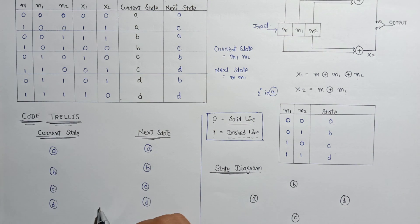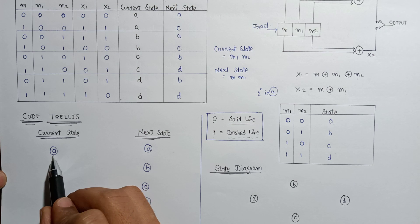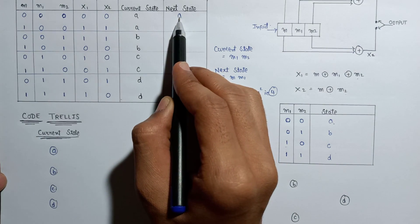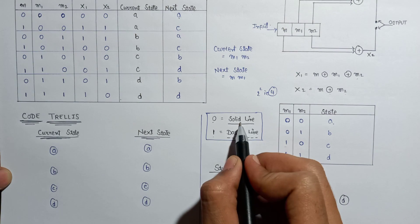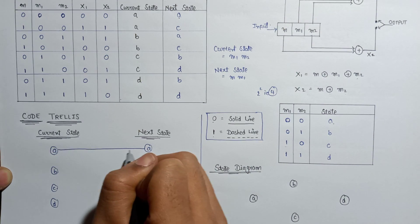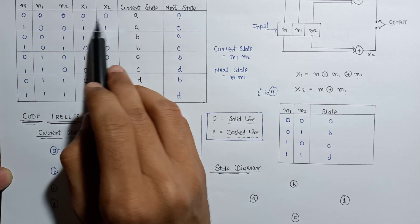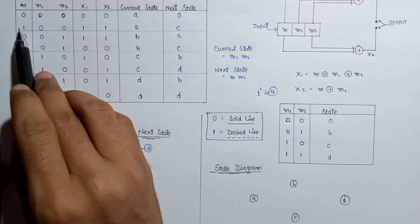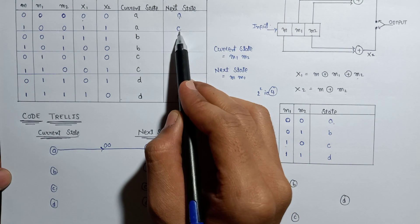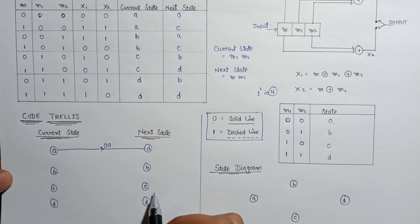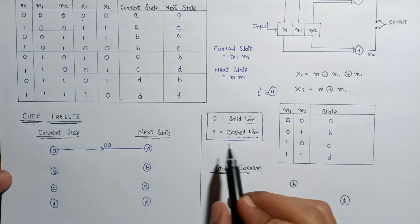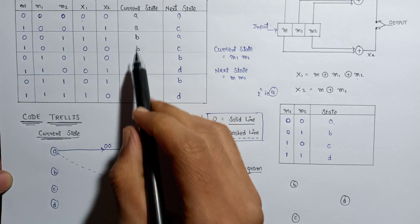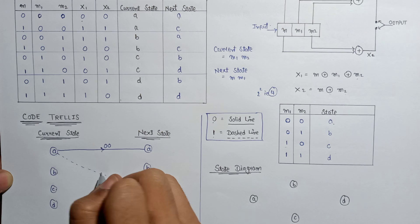Let's plot the code trellis diagram. If the current state is A and the input bit is 0, then the next state is A. Since it is 0, we use a solid line, and the output is 00. If the current state is A and the input message bit is 1, then the next state is C. Since the input is 1, we use dashed lines, and the output is 11.